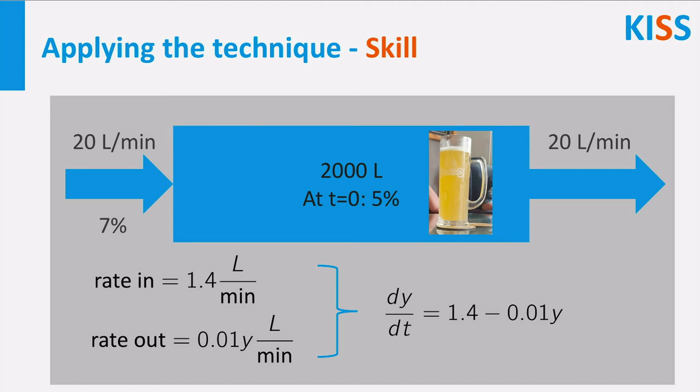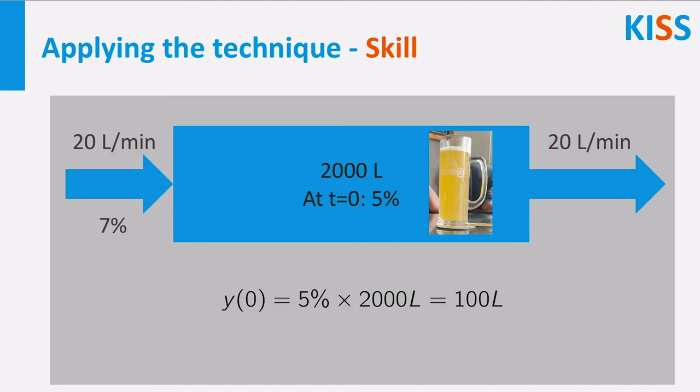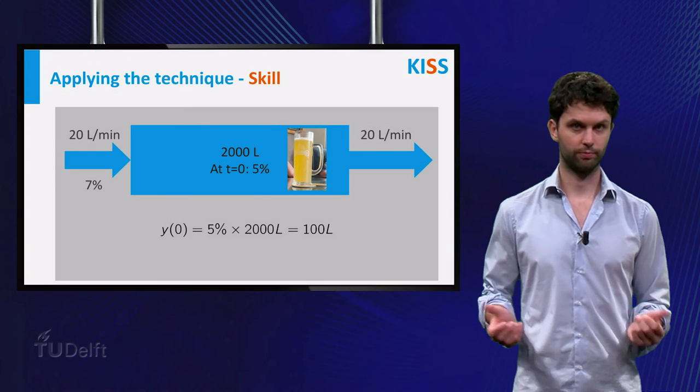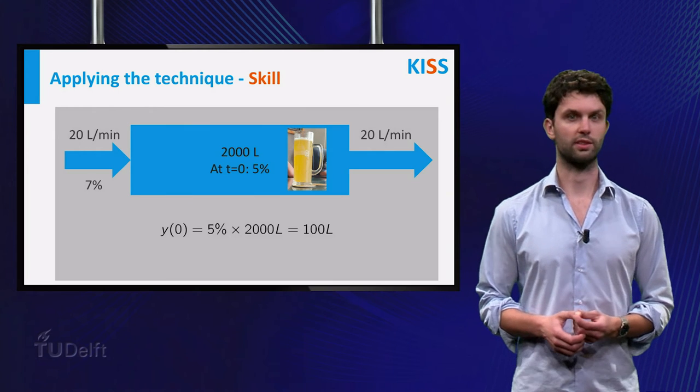Finally, combining the rate in and rate out gives indeed the required differential equation. To find the initial condition, we note that we are considering the amount of alcohol. Since the initial alcohol percentage of the tank is 5%, this means 5% of 2000 liters, which gives 100 liters of alcohol at t equal to 0. This finishes the third step.